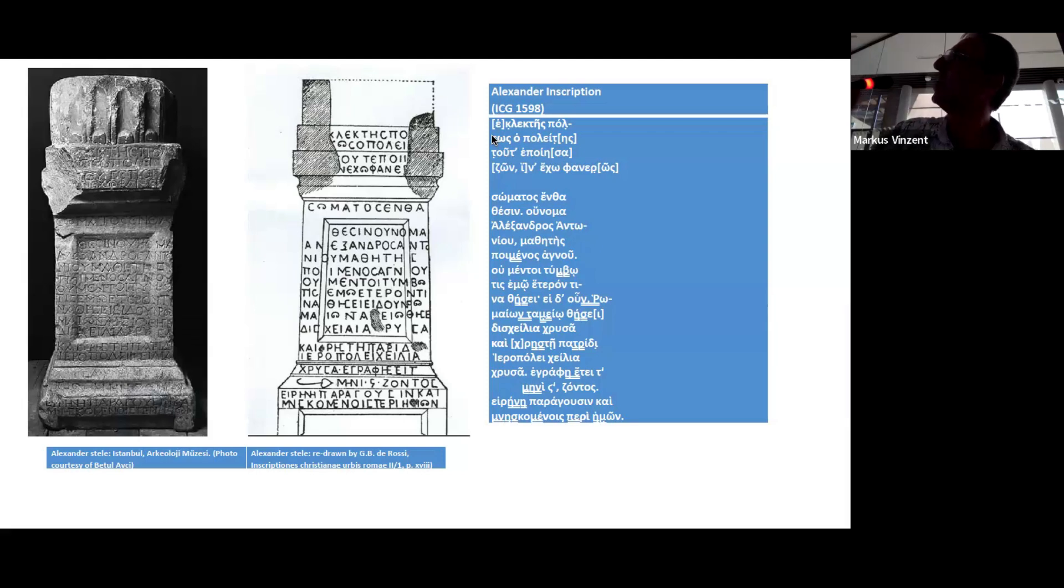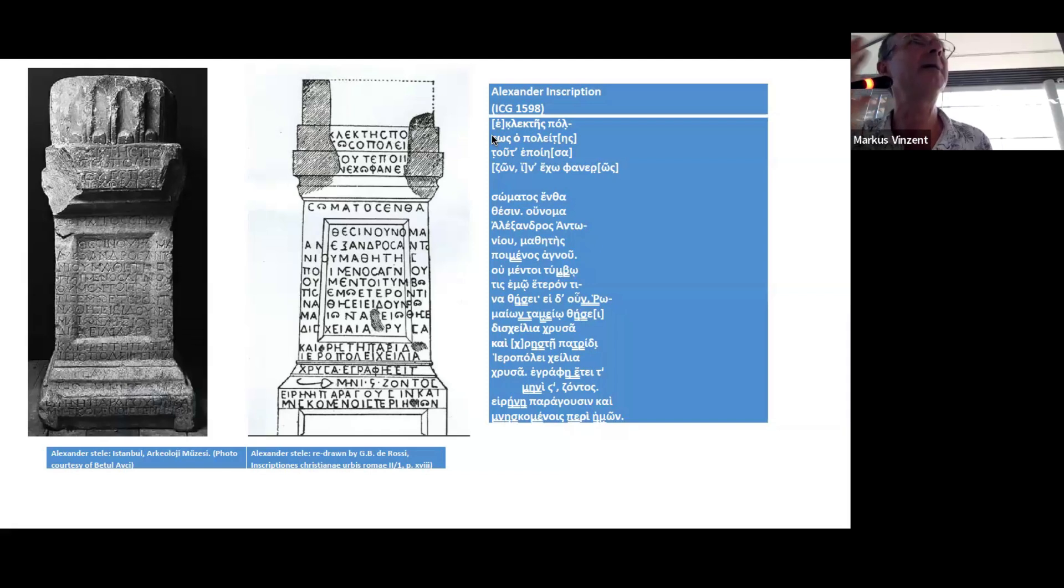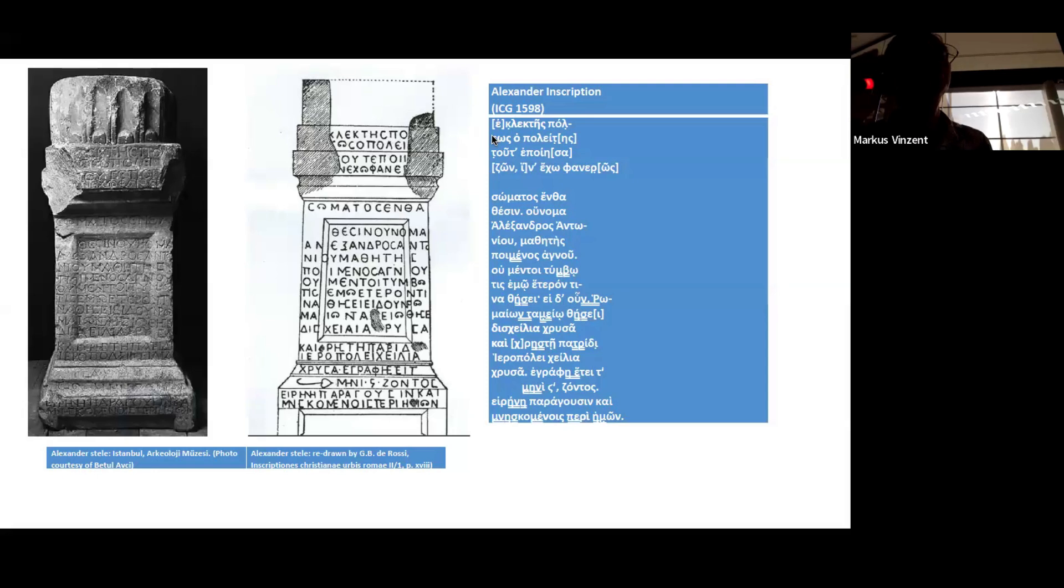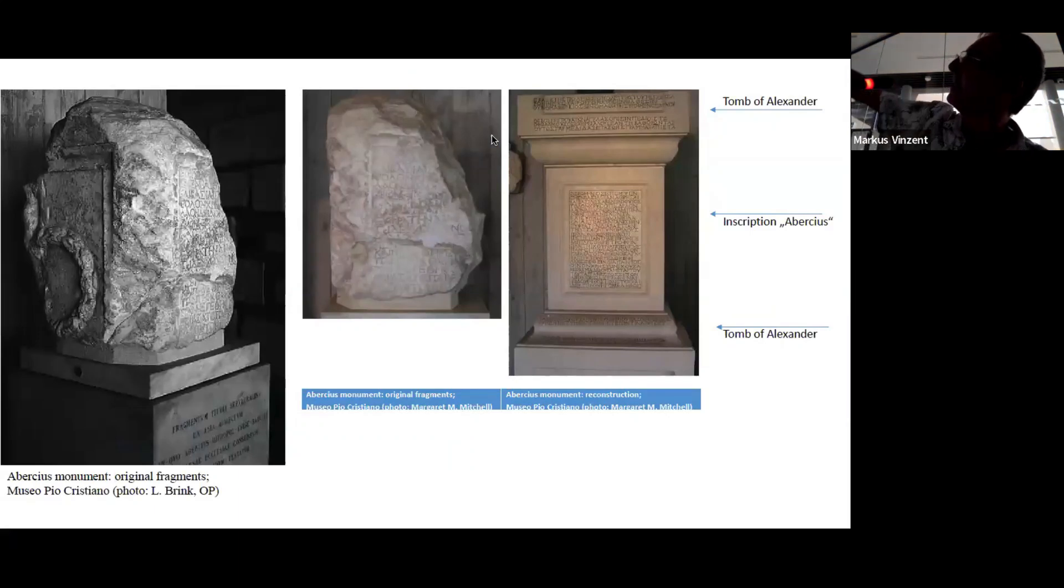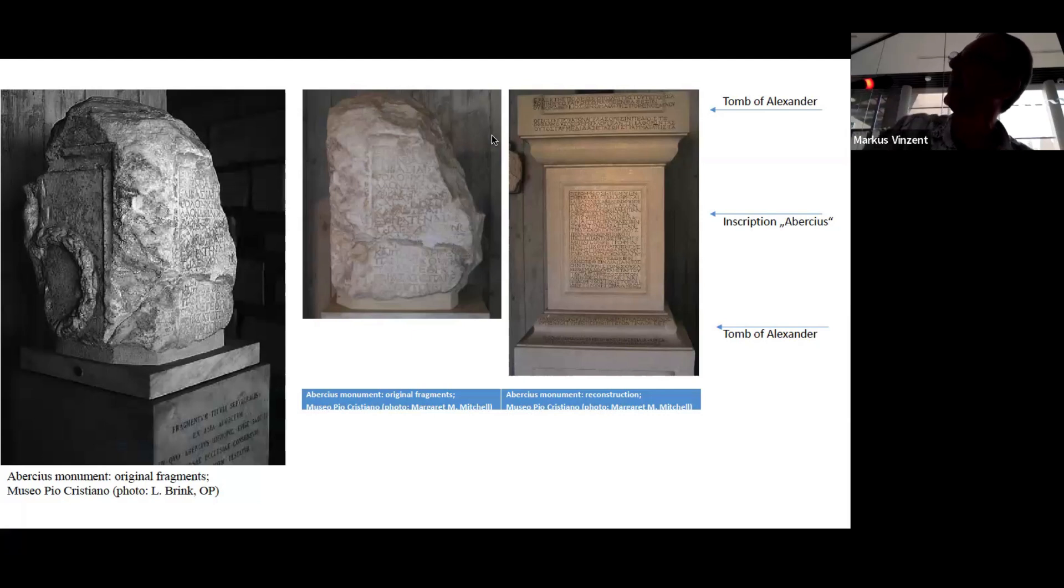So he is by name Alexander of Antonio. He is the student of a shepherd of renown. At the end of the tombstone, it's quite interesting because we have one of these famous requests that people who dare to use or reuse his tomb, they have to pay 2,000 gold coins to the tax office of Hierapolis. And this is by far the highest of those payments to be made from tombstones we know in the region of Phrygia and even beyond. So what I've said is beginning and end is preserved in the Alexander, the middle part is preserved in the two fragments that we can see.